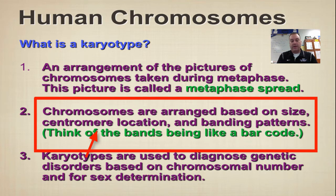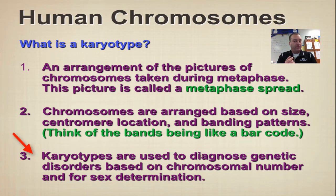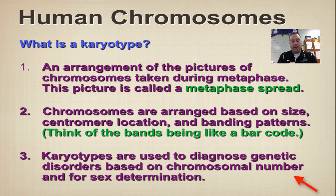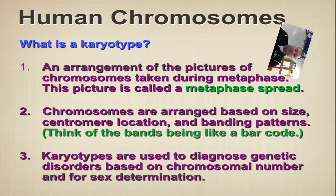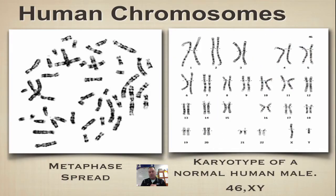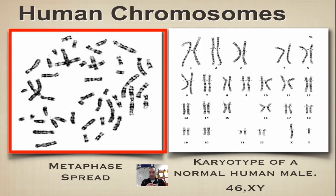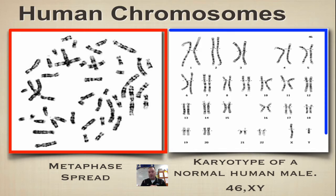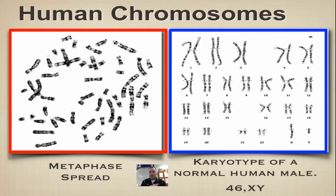Based upon those factors, you're going to arrange chromosomes into a particular arrangement called the karyotype. Karyotypes are going to be able to tell you the gender of the individual, and also any kind of genetic disorders based upon either number of chromosomes or part of a chromosome being missing. Here in this picture, over on the left we have a metaphase spread — that's the photograph of the chromosomes — and on the right is the arrangement into the karyotype. This karyotype is 46XY, which means it's a normal male.